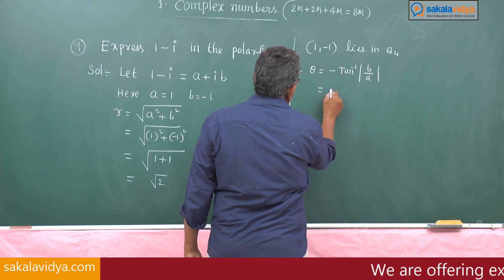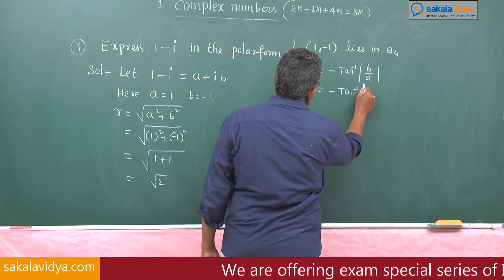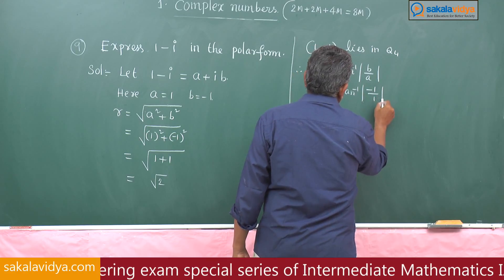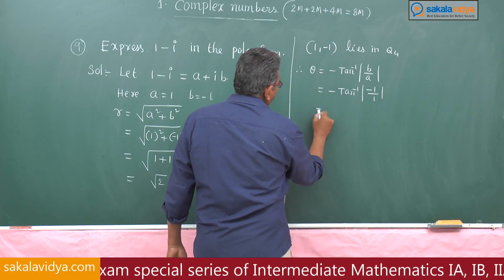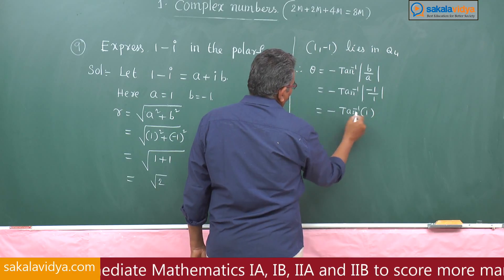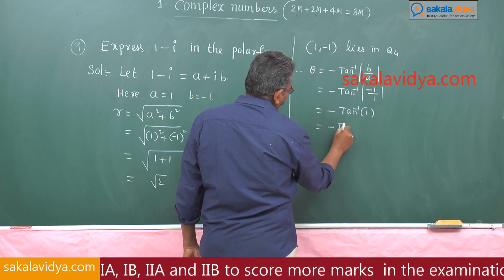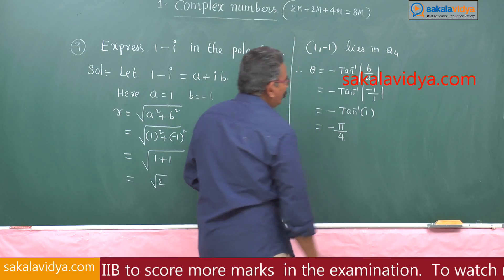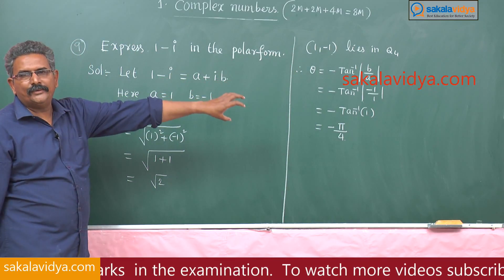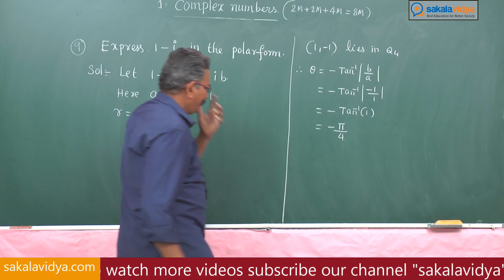This is minus tan inverse of b over a, which is minus tan inverse of minus 1 over 1, that is minus tan inverse 1, which is equal to minus pi by 4. Now we know the modulus and amplitude, so we can find the polar form.